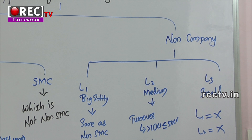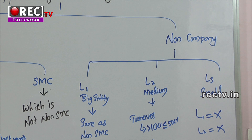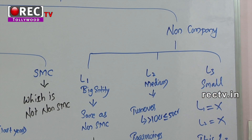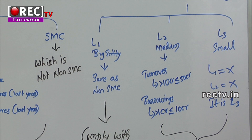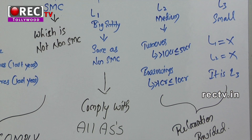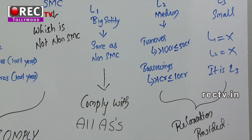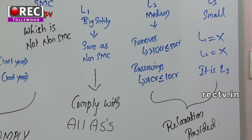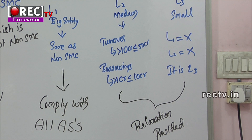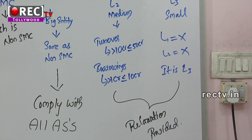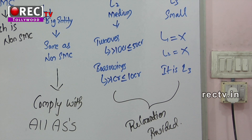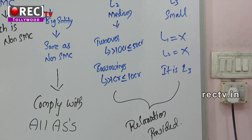For non-company entities, they are divided into three types: L1, L2, and L3. L1 is a big entity, same as non-SMC — all accounting standards must be complied with. L2 is a medium entity: turnover should be greater than 10 crores and less than or equal to 50 crores, and borrowing should be greater than 1 crore but less than or equal to 10 crores.